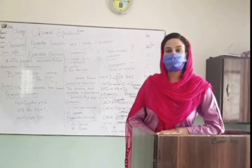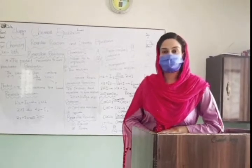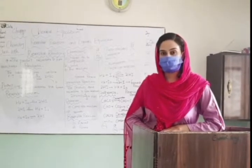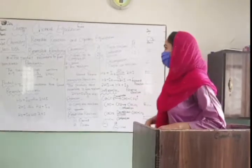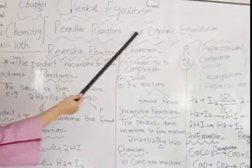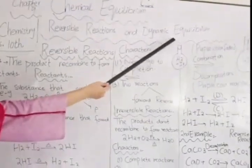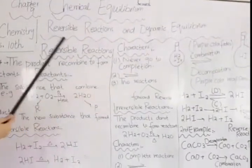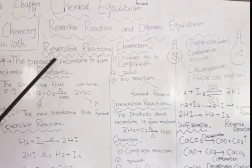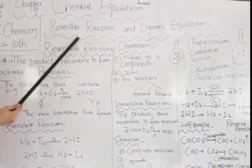Hello everyone. Today we will start the next class of chapter number 9, that is Chemical Inquiry. Our topic is Reversible Reactions and Dynamic Equilibrium. We will discuss Reversible Reactions.